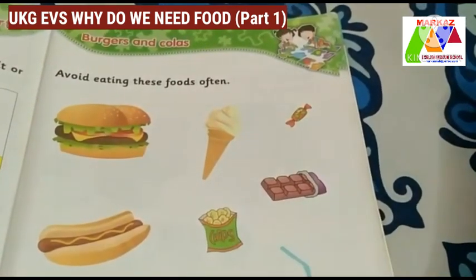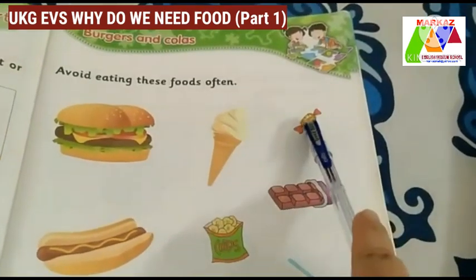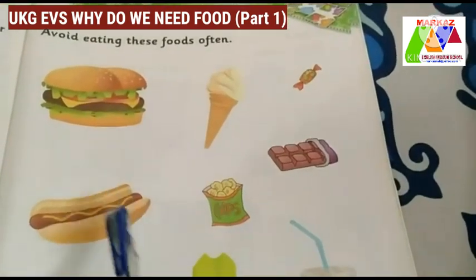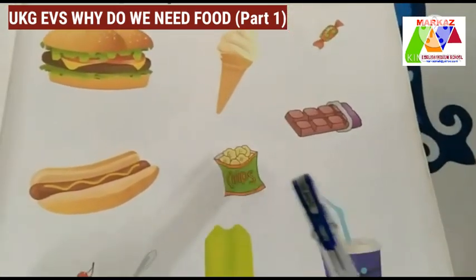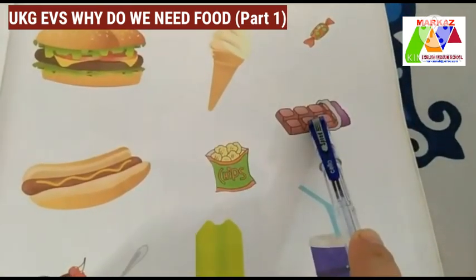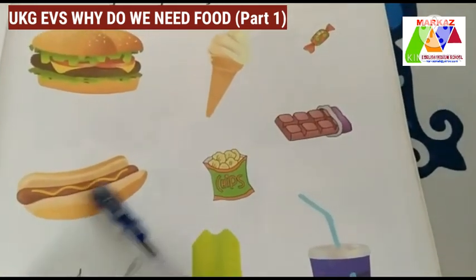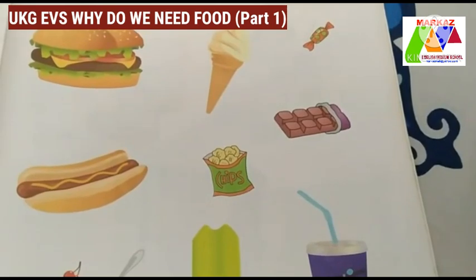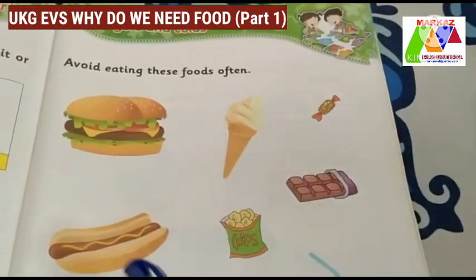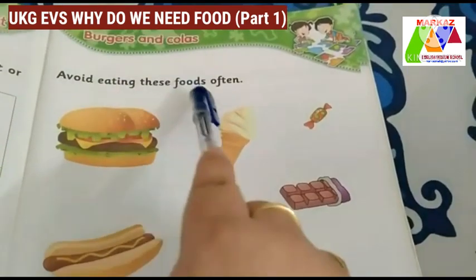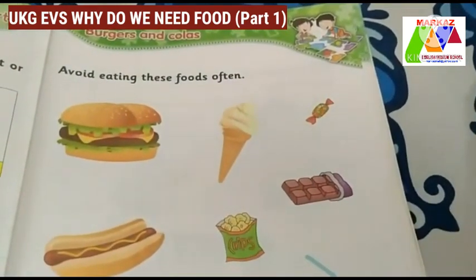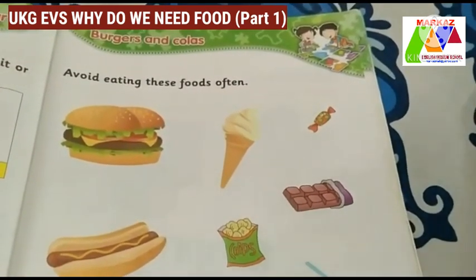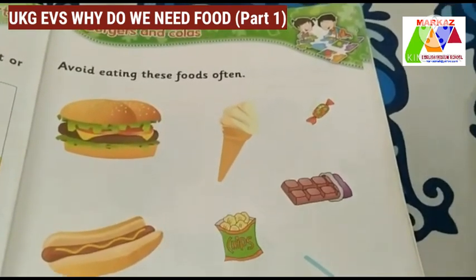Some junk food items are sweets, chips, burger, fizzy drinks, pizzas and chocolates. Children, you should avoid these food items as they are very harmful for us. Junk food items are foods that are not healthy for us.